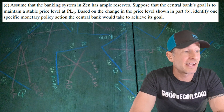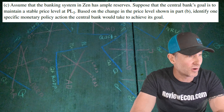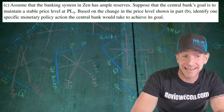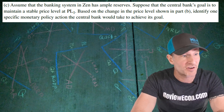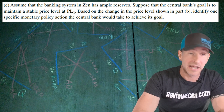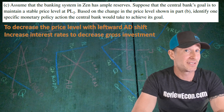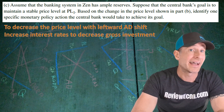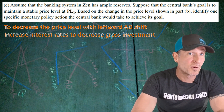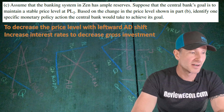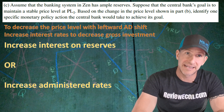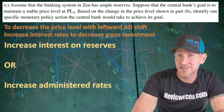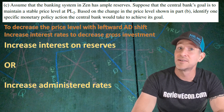For part C, we assume Zeta has ample reserves, and the central bank's goal is to maintain a stable price level back at PL1. Since the price level increased, we need to identify one specific monetary policy action the central bank could take. To get the price level back down, the central bank will try to decrease aggregate demand by increasing interest rates, which decreases gross investment and causes a leftward shift of the aggregate demand curve. Since there are ample reserves, the two valid answers are to increase interest on reserves or increase administered rates. Answers about open market operations, the reserve requirement, or the discount rate will not receive credit here.